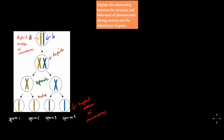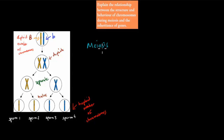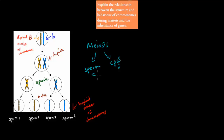Before I start with this video, I want to go over a quick conceptual understanding of meiosis. We need meiosis to produce our gametes, which are our sex cells. For meiosis we produce either sperm in males or eggs in females. These sex cells are important when it comes to producing offspring.